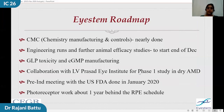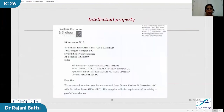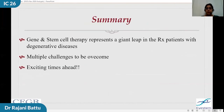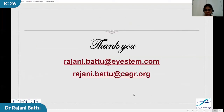What is the roadmap for iSTEM? Despite difficulties with the pandemic, their roadmap to start clinical trials has proceeded unhindered. They have a collaboration with LV Prasad Eye Institute to start phase one trials, hoping to start in the second or third quarter of 2021. A pre-IND meeting with the US FDA was completed a year ago. Work on photoreceptors is also underway, about a year behind the RPE schedule, and they have IP for the process of making these cells. In summary, in spite of multiple challenges, both gene therapy and stem cell therapy represent a giant leap in the treatment of patients who till now have no treatment, and these are indeed very exciting times ahead. Thank you very much.